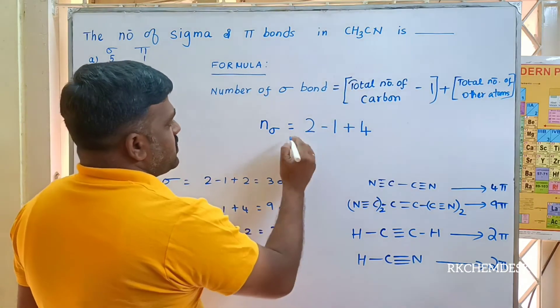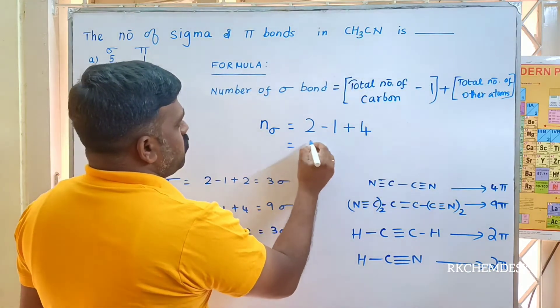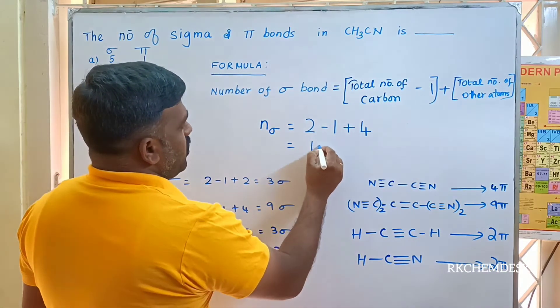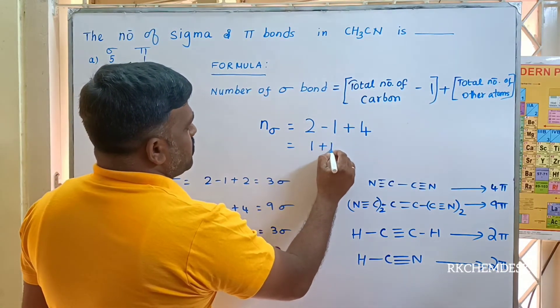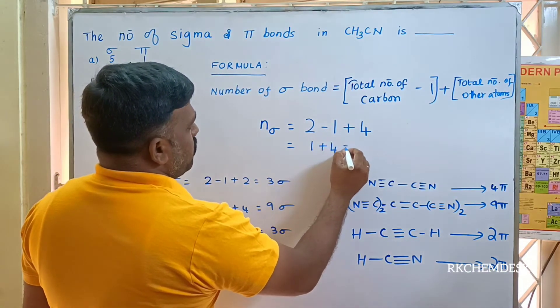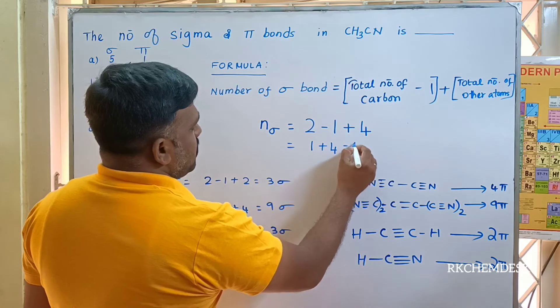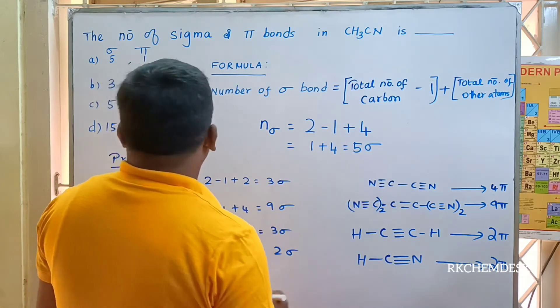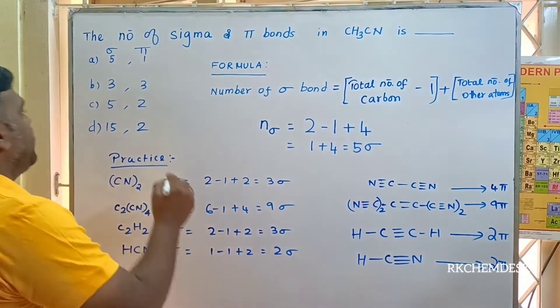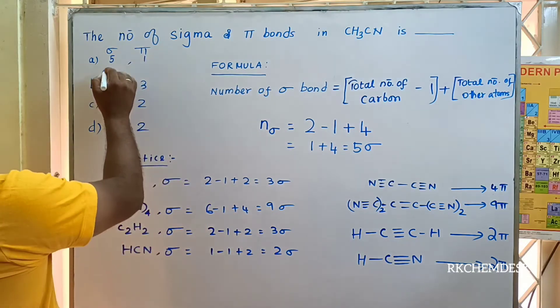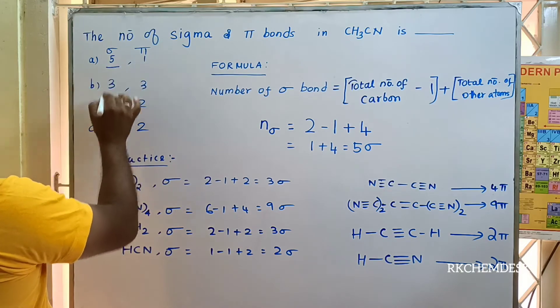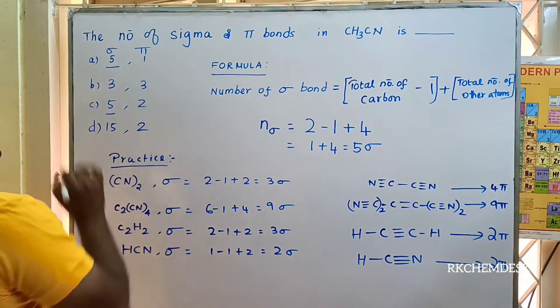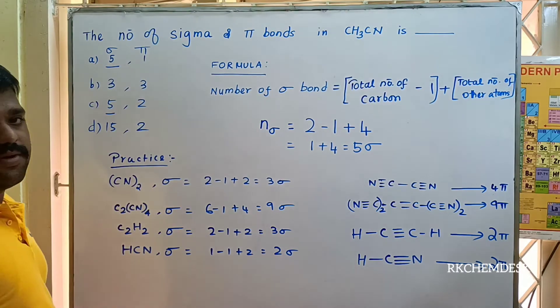So if you calculate: two minus one equals one, then one plus four equals five sigma bonds.